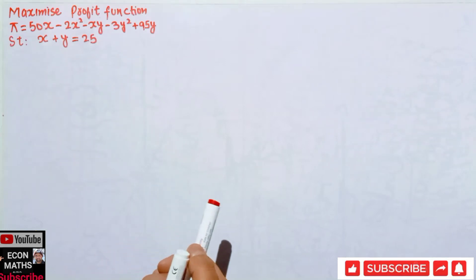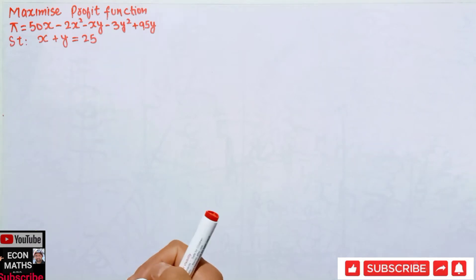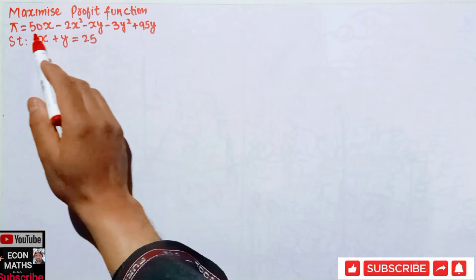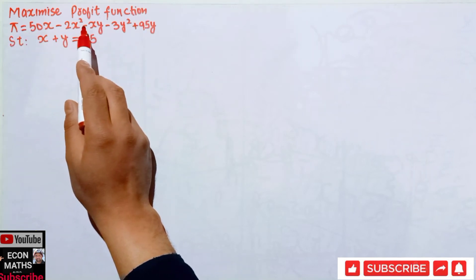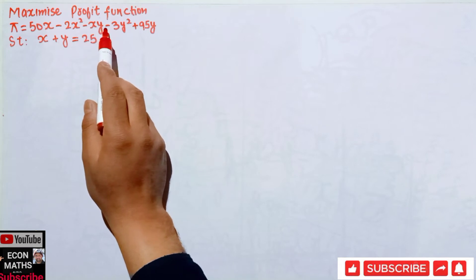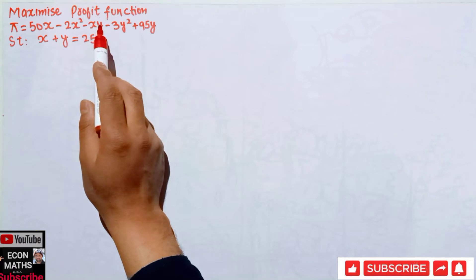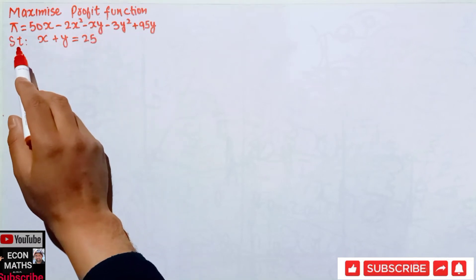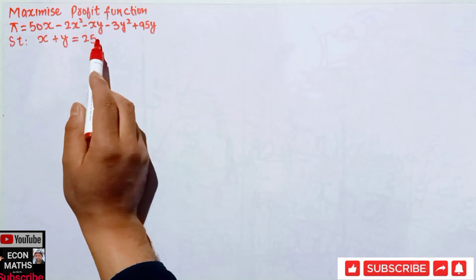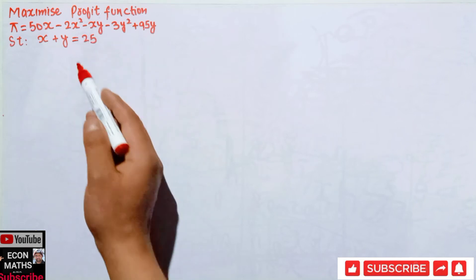Hi, this is Halal. In this video on Mathematical Economic Series, we will solve a numerical on the constraint optimization problem. The question is: maximize the profit function π = 50x - 2x² - xy - 3y² + 95y, where x and y are the outputs of the goods produced, subject to the constraint x + y = 25. We have to maximize this profit function with respect to the given constraint.